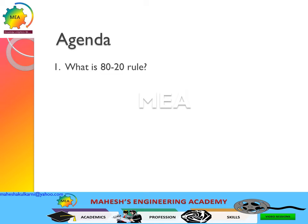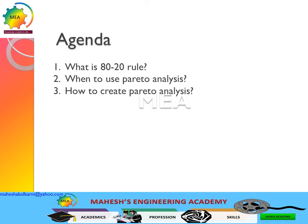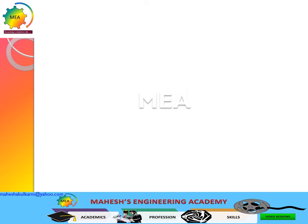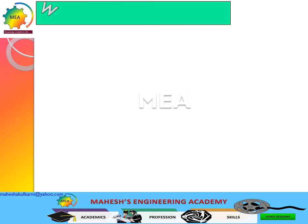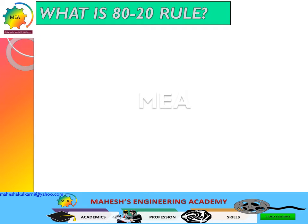The agenda for discussion will be to understand what is the 80/20 rule, when to use Pareto analysis, and how to create a Pareto analysis. If you have any questions, please feel free to post them. The 80/20 rule, popularly known as Pareto analysis, states that 80% of the problems are due to 20% of the causes.